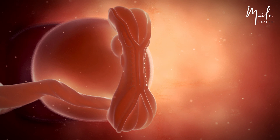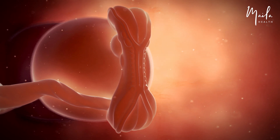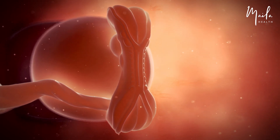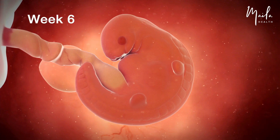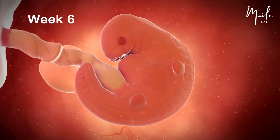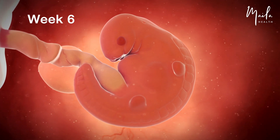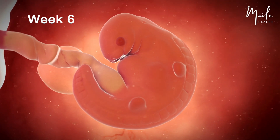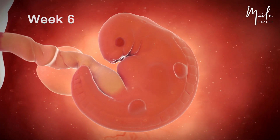The ectoderm, or outer layer, develops into the nervous system and skin. At six weeks, the yolk sac starts shrinking as the placenta nourishes the embryo.